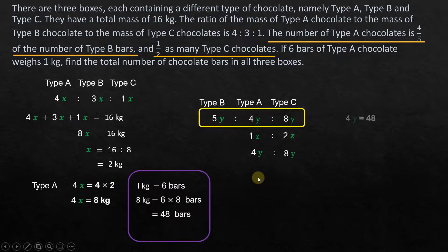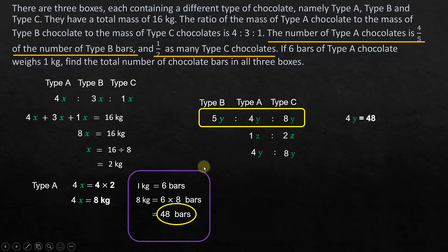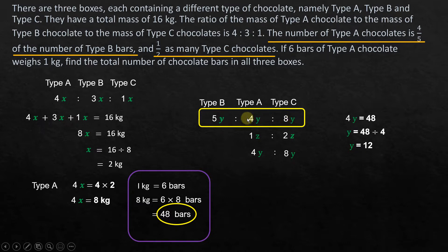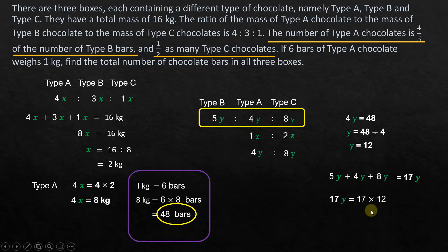We already know type A has 48 bars, so 4y = 48, giving y = 48 ÷ 4 = 12. Now total bars = 8y + 4y + 5y = 17y. With y = 12, total = 17 × 12 = 204 chocolate bars in all three boxes.